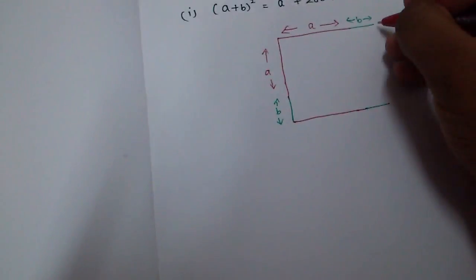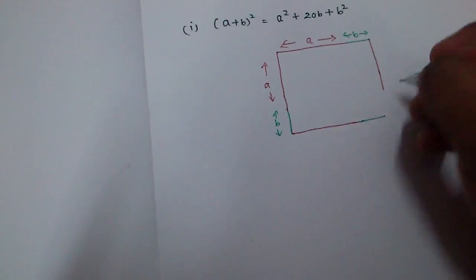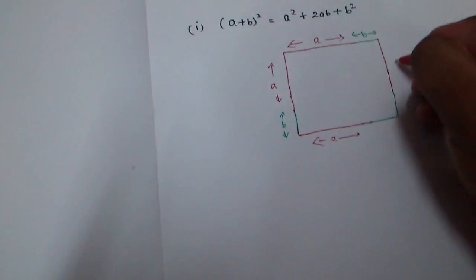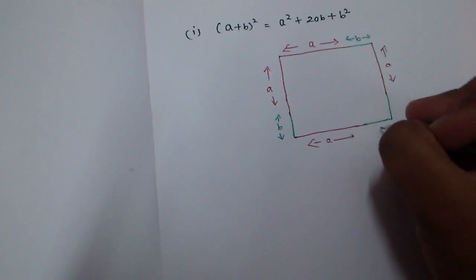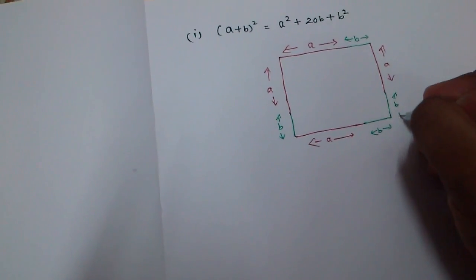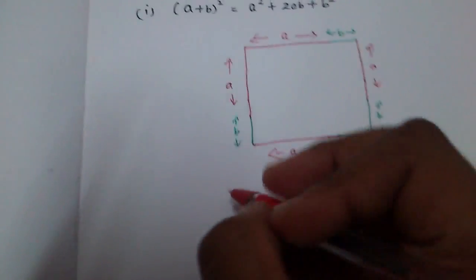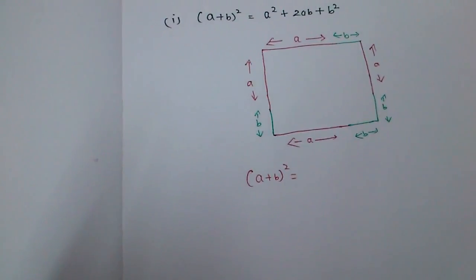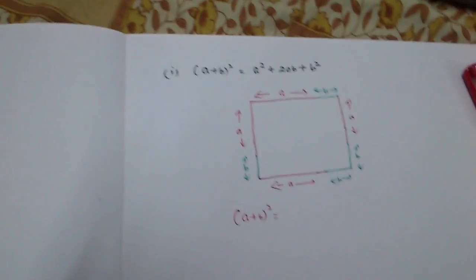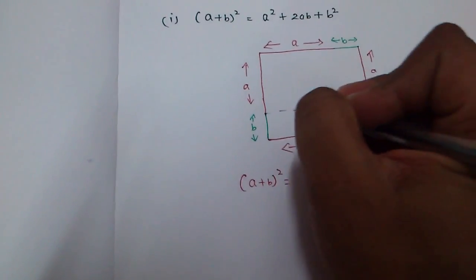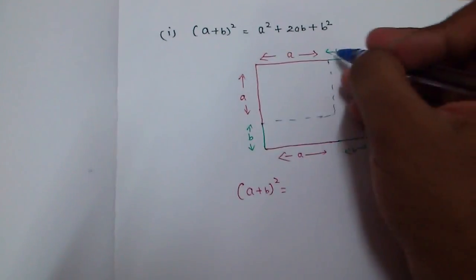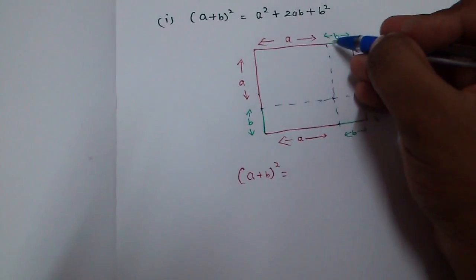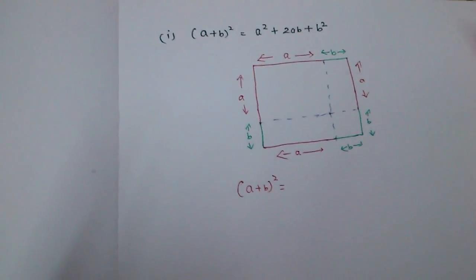This is a square with side (a + b). This length is a and this length is B. In order to find (a + b)², I divide this square into four distinct parts: one square with side a, another square with side B, and two remaining rectangles.